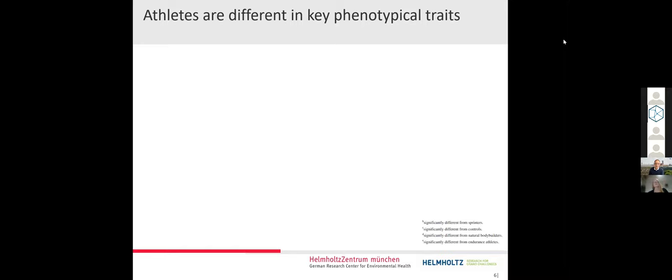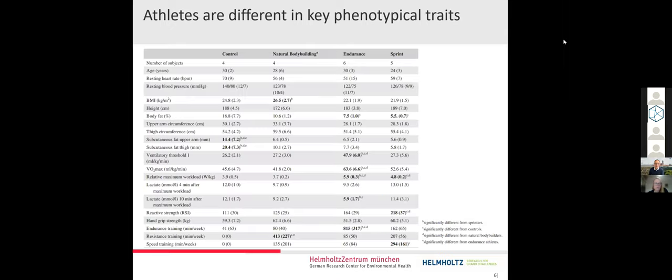On the first step, we wanted to verify if athletes are different in key phenotypical traits. Therefore, we used the ANOVA to compare phenotypical traits like height, body fat, BMI, whole anthropometry, key endurance parameters that were measured during the endurance capacity test, and strength parameters.